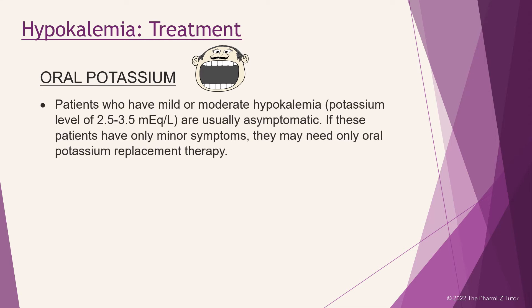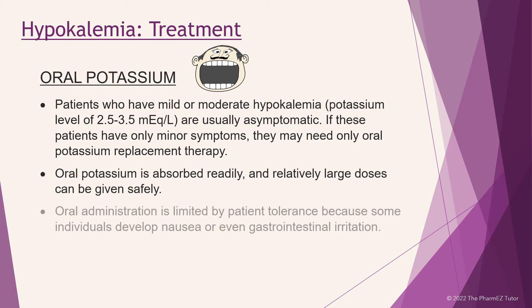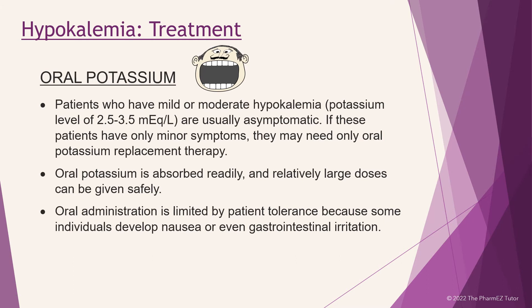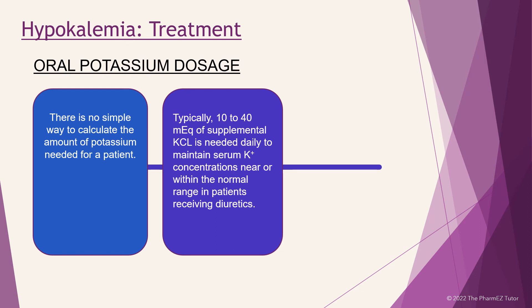Patients who have mild or moderate hypokalemia, potassium level of 2.5 to 3.5, are usually asymptomatic. If these patients have only minor symptoms, they may only need oral potassium replacement therapy. Oral potassium is absorbed readily and relatively large doses can be given safely. Oral administration is limited by patient tolerance, as some individuals develop nausea or gastrointestinal irritation. There is no simple way to calculate the amount needed. Typically, 10 to 40 MEQs of supplemental potassium chloride is needed daily to maintain serum potassium concentrations near the normal range in patients receiving diuretics.